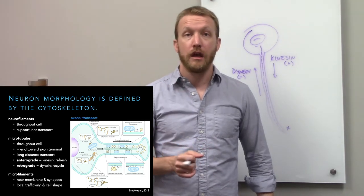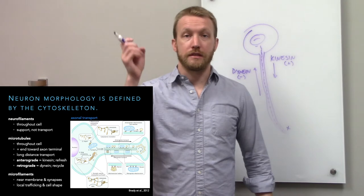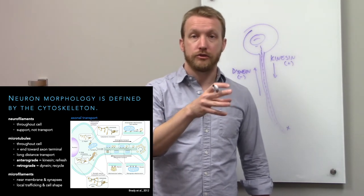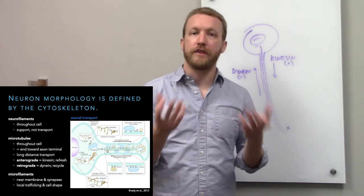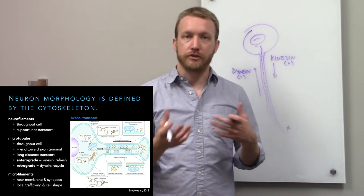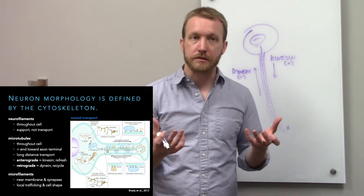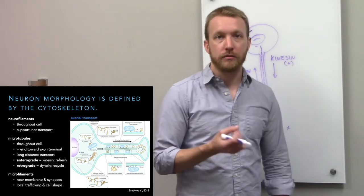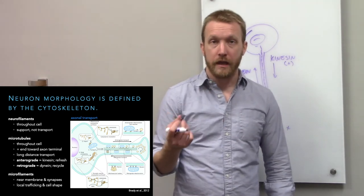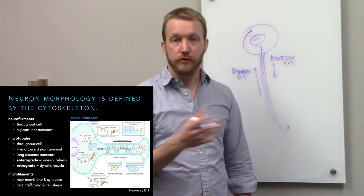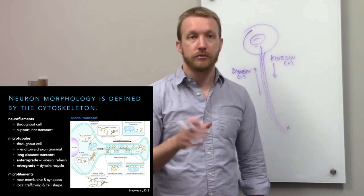We have anterograde transport — down the axon toward the synapse — bringing fresh organelles like mitochondria, fresh vesicles to store and release neurotransmitters, and fresh neurotransmitter precursors. Then we have retrograde transport by dynein, going from the synapse toward the cell body. This is used to remove old, worn-out organelles and to bring in signaling endosomes.